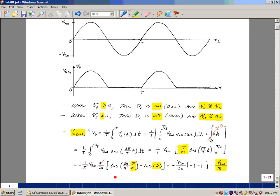And then I've got the cosine of zero, which is equal to one, but I've got a minus sign here. So I've got a minus two in here. Minus signs cancel, the two cancels, and I'm left with v sub s maximum over pi. So the average value of this waveform is the maximum value here divided by pi. Of course here it's equal to zero.